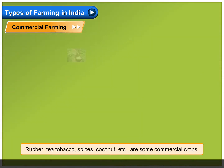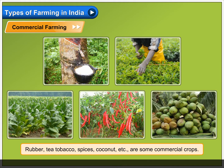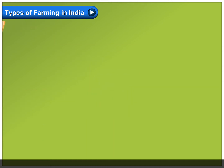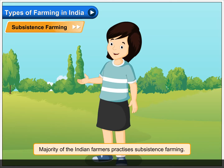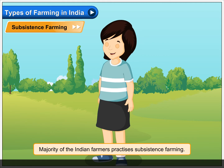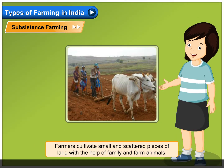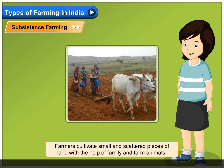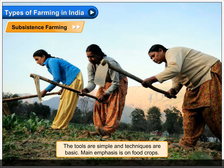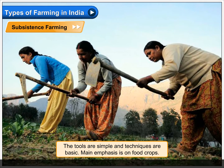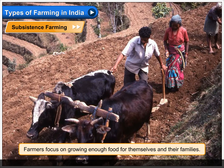Rubber, tea, tobacco, spices, coconut, etc. are some commercial crops. Subsistence farming: the majority of Indian farmers practice subsistence farming. Farmers cultivate small and scattered pieces of land with the help of family and farm animals. The tools are simple and techniques are basic. The main emphasis is on food crops — farmers focus on growing enough food for themselves.